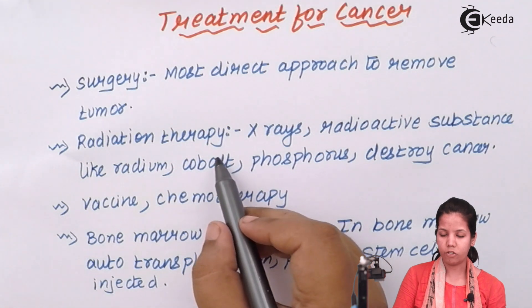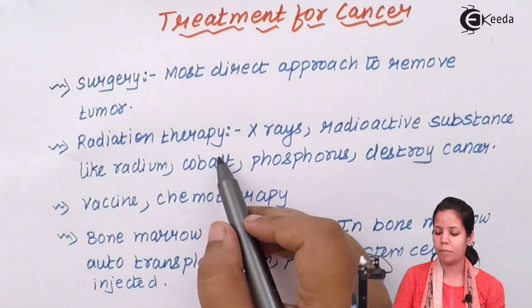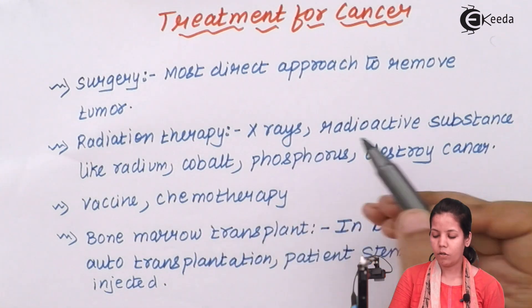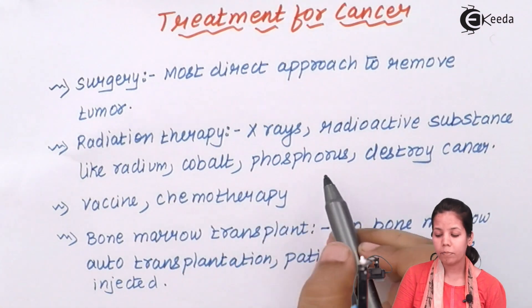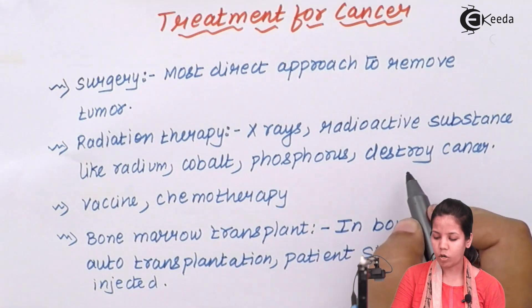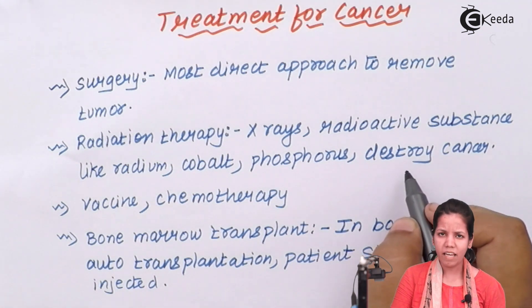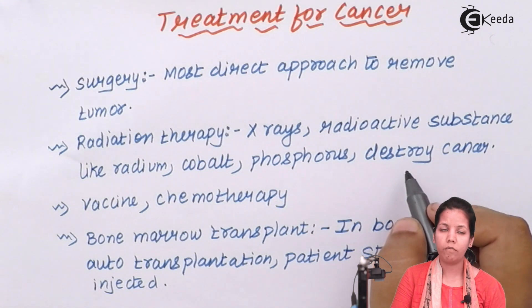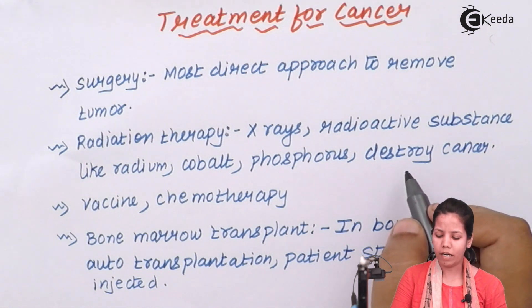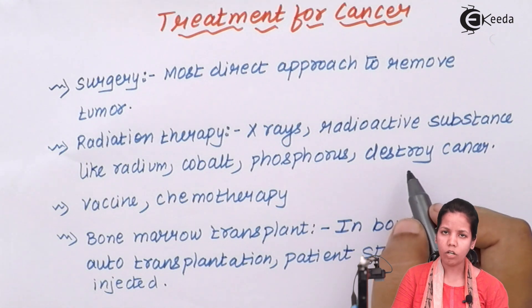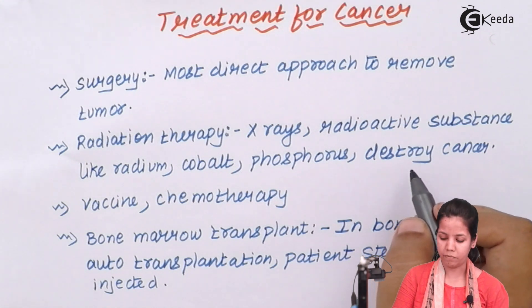Radiation therapy means using X-rays or radioactive substances like radium, cobalt, and phosphorus to destroy cancer. When these elements are used to destroy cancer they can have certain side effects — your natural, non-cancerous living cells are also destroyed in this process. So radiation therapy is not a good option from that perspective.